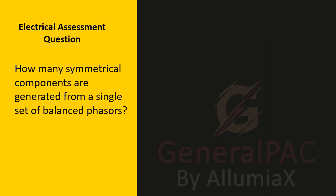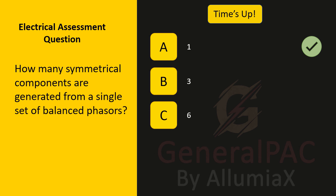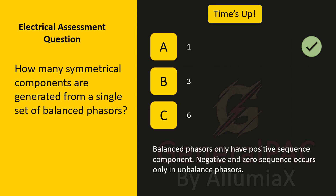How many symmetrical components are generated from a single set of balanced phasors? Is it one, three, or six? It's one. Balanced phasors only have a positive sequence component. Negative and zero sequence components occur only in unbalanced phasors, so when you have a balanced set, you should only have a positive sequence component.